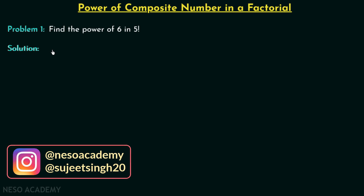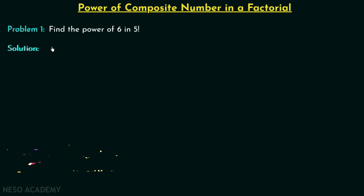Step number 1 is to break 6 as the multiplication of prime numbers. When we multiply 2 and 3, two prime numbers, we will have 6. So 6 we can write as 2 multiplied by 3, where 2 is our first prime number and 3 is our second prime number. We are done with step number 1 and now we will move on to step number 2.